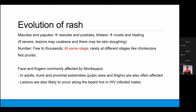The rash starts as macules and papules, then progresses to vesicles, pustules, blisters, and then crusts. It is not pruritic. Unlike chickenpox, all lesions seen in a monkeypox patient are at the same stage at any given time. There is a maculopapular stage and a vesiculopustular stage, but all lesions progress together. In chickenpox, you see macules, papules, vesicles, and pustules all at different stages simultaneously — whereas in monkeypox, all lesions are at the same stage and the rash is non-pruritic.